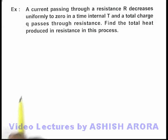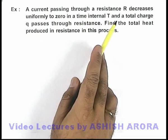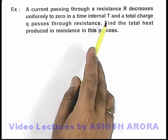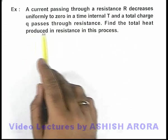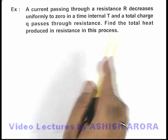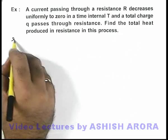In this example, we are given that a current passing through a resistance R decreases uniformly to zero in a time interval T, and a total charge q passes through the resistance. We are required to find the total heat produced by the resistance in this process.